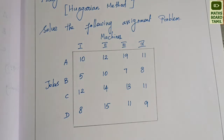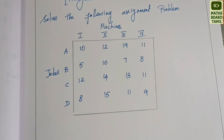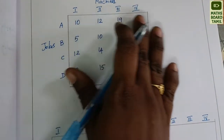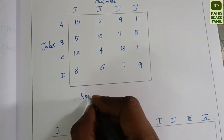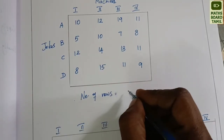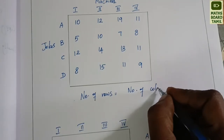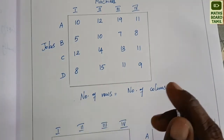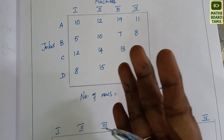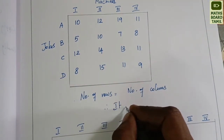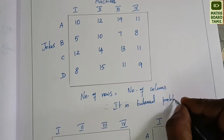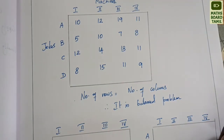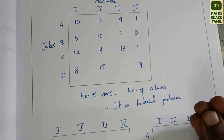Note that the transportation problem and assignment problem are different. For the assignment problem, the number of rows must equal the number of columns. Here we have 4 rows and 4 columns, so it is a 4×4 matrix — a balanced problem. If it were unbalanced, we would add a dummy row or column and proceed.